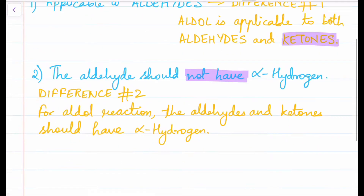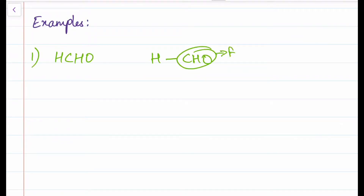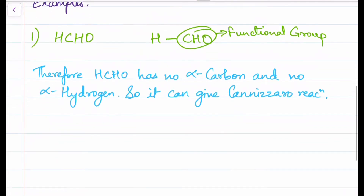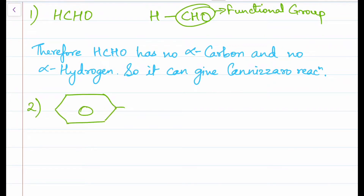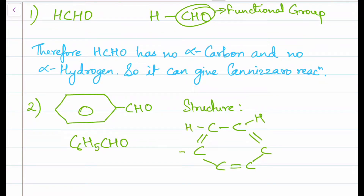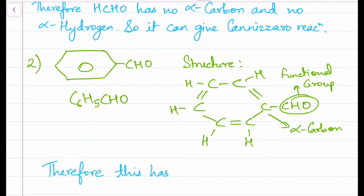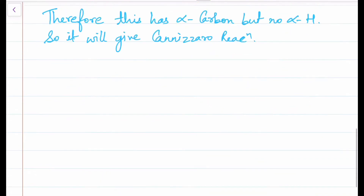So what we've learned so far: aldehydes with no alpha hydrogen will give you Cannizzaro reactions. The first example is formaldehyde, HCHO. The CHO is the functional group — there is no carbon attached to it, so there is no alpha carbon and no alpha hydrogen present. The second example is benzaldehyde, C6H5CHO. Here there is an alpha carbon, but there are no alpha hydrogens present. Both of these molecules will give you Cannizzaro reaction.